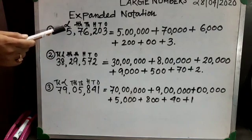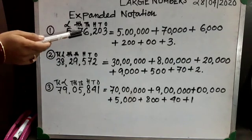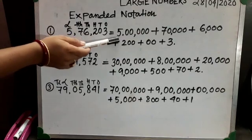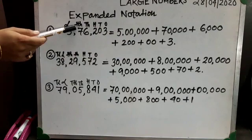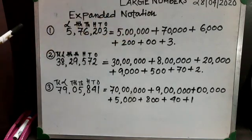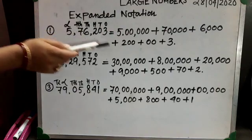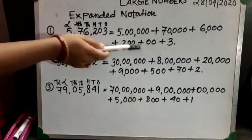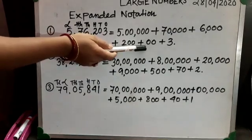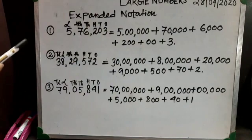I have written the five in the lakh place, so it becomes five lakh. Then seven comes in the ten thousands place, so I have written seventy thousand. Then six comes in the thousands place. Two comes in the hundreds place, giving two hundred. Zero is in the tens place, so I have put double zero for tens, and then three comes in the ones place.